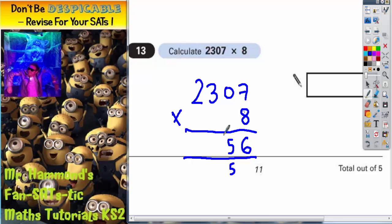3 times 8 is 24. Put the 4 in, carry the 2. And 2 times 8 is 16 plus the 2 is 18.